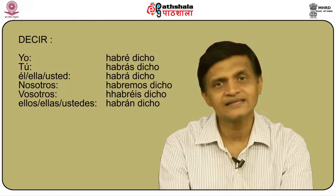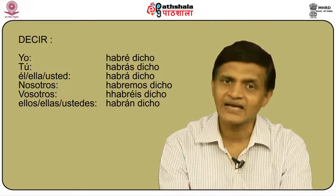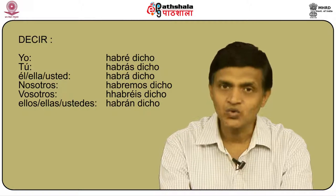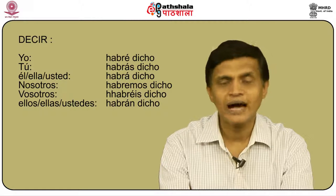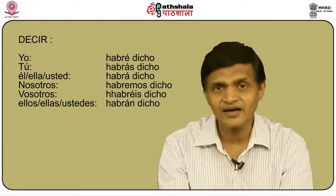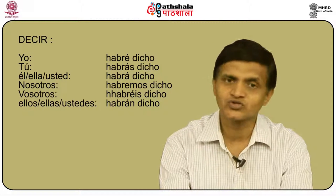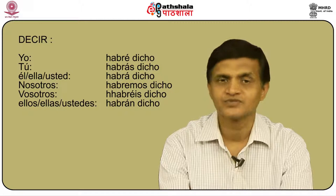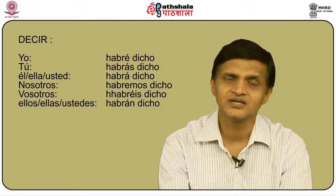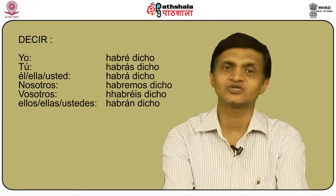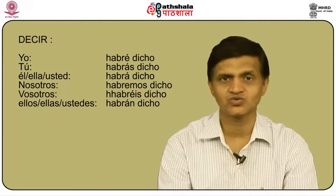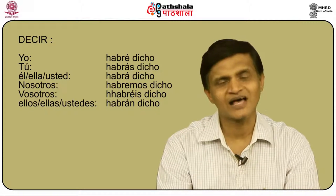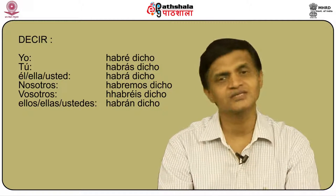For decir, an IR ending verb, please remember that decir is irregular in its past participle — it is 'dicho'. So: yo habré dicho, tú habrás dicho, él/ella/usted habrá dicho, nosotros habríamos dicho, vosotros habréis dicho, and ellos/ellas/ustedes habrán dicho.